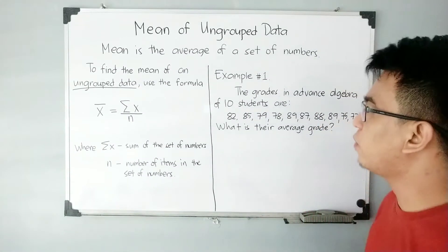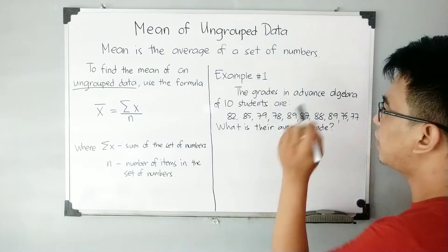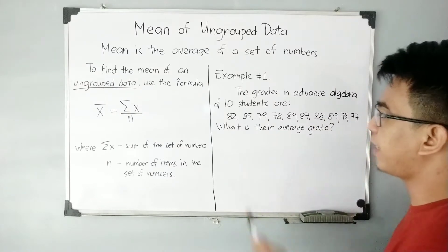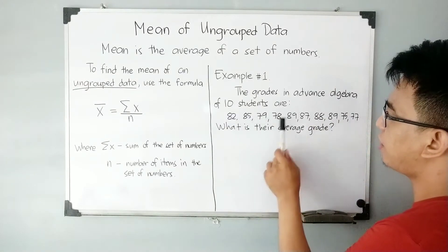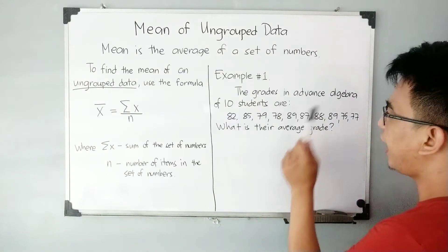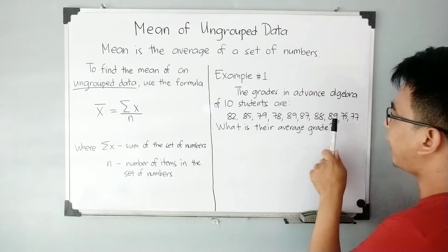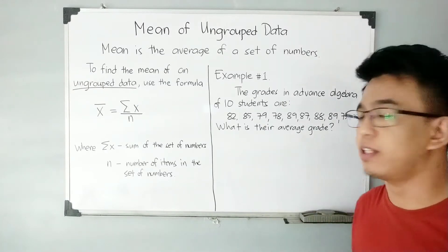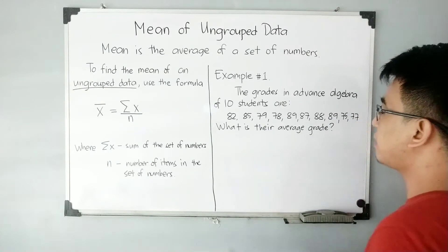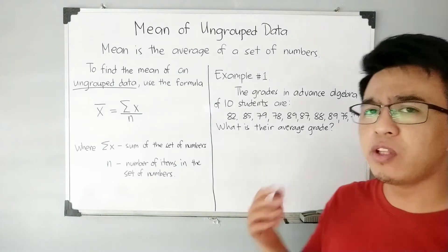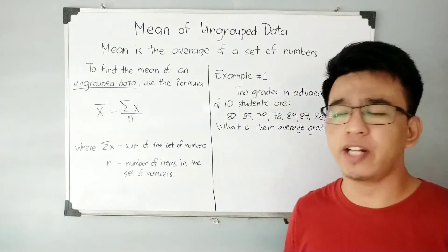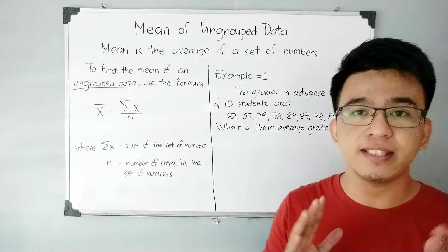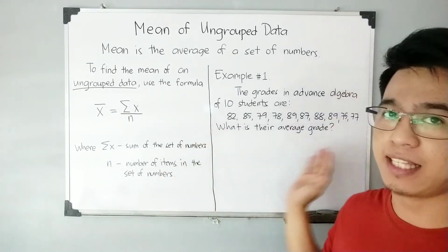We have here example number one, wherein the grades in advanced algebra of 10 students are: 82, 85, 79, 78, 89, 87, 88, 89, 75, and 77. And here's the question: What is their average grade? When we talk about the average grade, just think of it as we are asked for the mean of this given data set — these are the grades of 10 students in their algebra class.